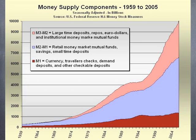And this can cause confusion. The measures of money supply include M1, M2, and M3.